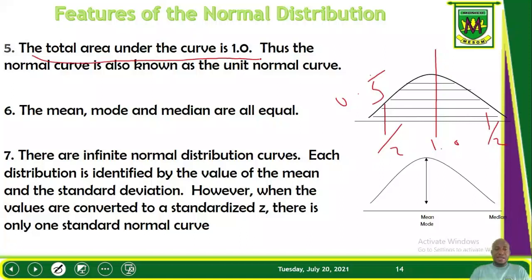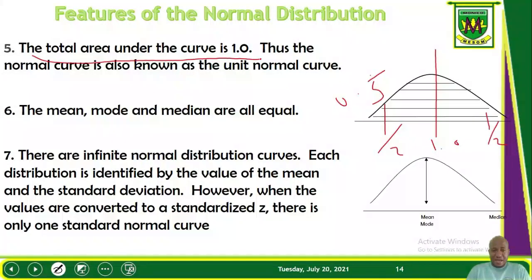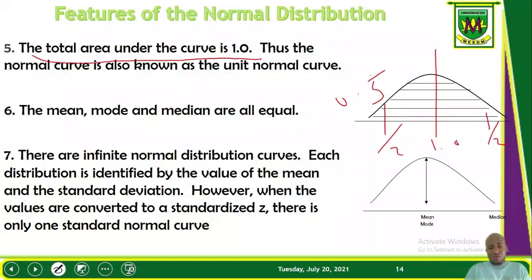The sixth feature is that the mean, the mode, and the median are all equal. When dealing with the standard normal distribution, they are all 0. For a non-standardized normal distribution, whatever mean you have will be the same as the median and the mode. Although we typically report the mean for normal distributions, it's important to note that all three measures of central tendency are equal.